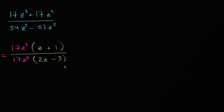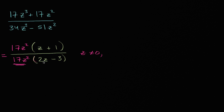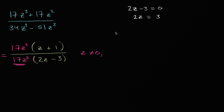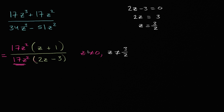We need to carefully restrict the domain. If z equals zero, then 17z² equals zero, making the denominator zero — so z cannot equal zero. Also, z cannot equal whatever makes 2z minus three equal zero. Solving: 2z minus three equals zero, add three to both sides to get 2z equals three, divide by two to get z equals three halves. So z cannot equal zero, and z cannot equal three halves.